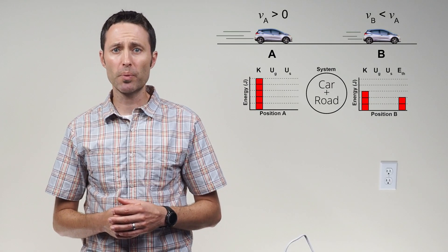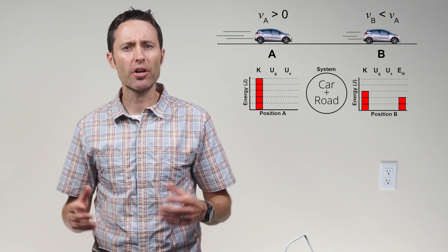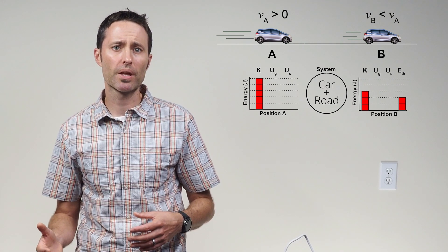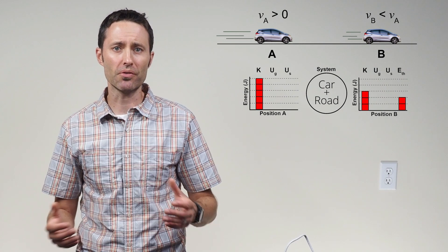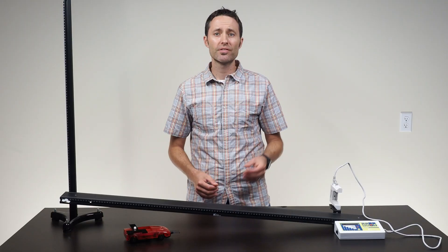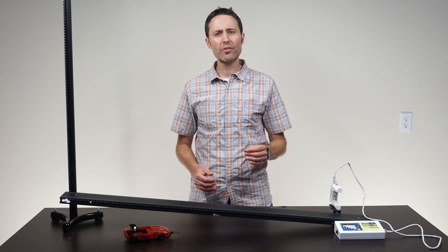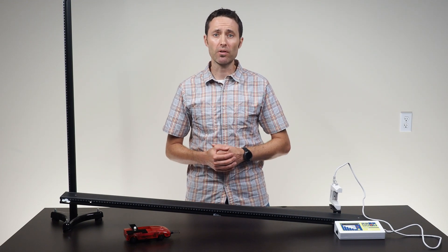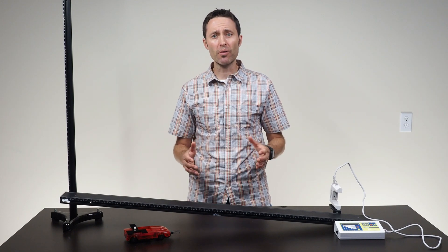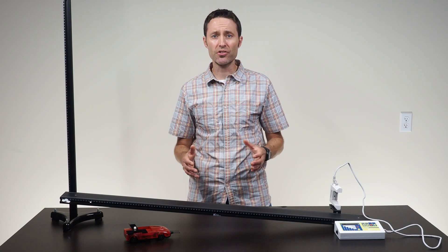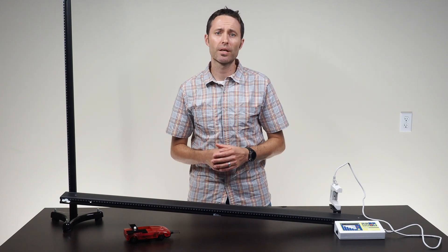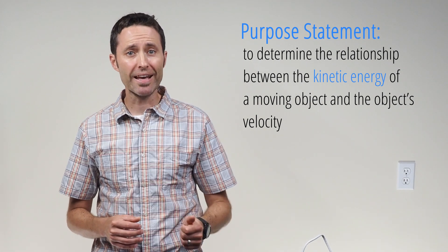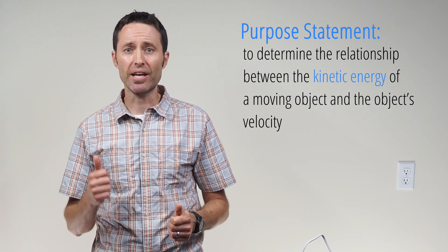If students already have experience with energy bar graphs, they already understand that faster-moving objects store more kinetic energy and vice versa — they might just need to remind themselves of this fact. Tell students they are going to do a lab investigation that finds out how an object's kinetic energy is quantitatively related to its speed or velocity. This will give them an equation to calculate the amount of kinetic energy stored by a moving object. Write the following purpose on the board: to determine the relationship between the kinetic energy of a moving object and the object's velocity.